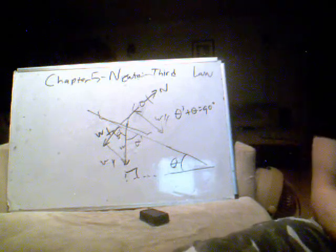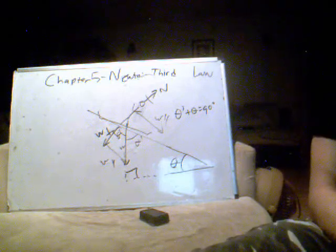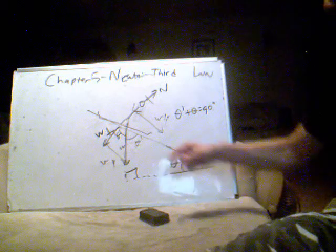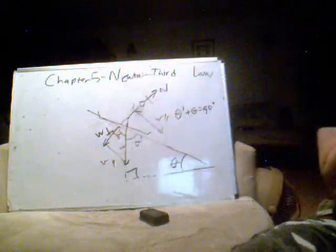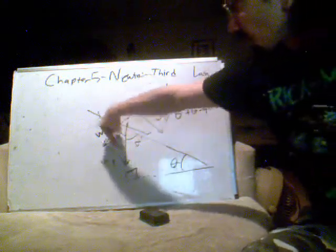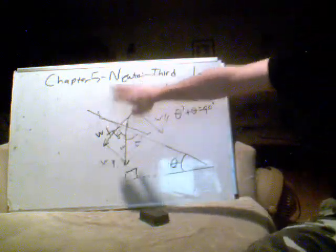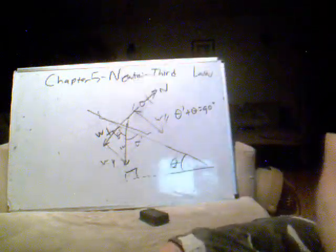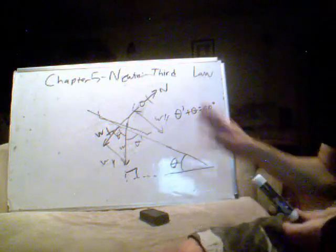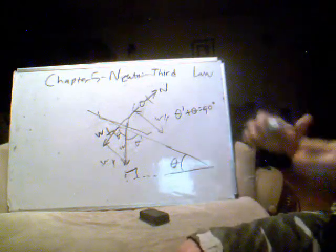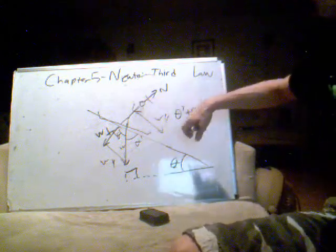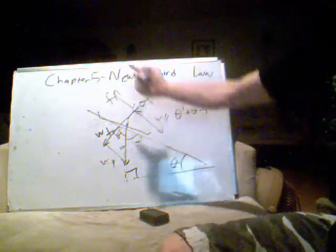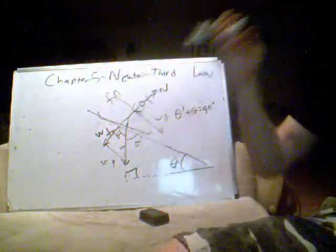So we can say that there is a component of the gravitational force perpendicular to the surface that is canceled out by the normal force, and a component parallel to the surface that causes acceleration. If friction is part of the picture, the rider is going to be sliding downhill, so friction acts uphill, trying to slow the rider down.